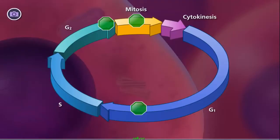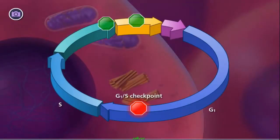The first checkpoint is the G1S checkpoint, and is considered the primary point at which the cell cycle continues or stops. External signals and growth factors can influence the cell cycle and affect the progress at or before this critical checkpoint.